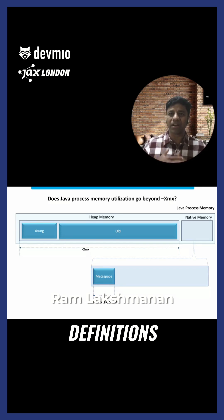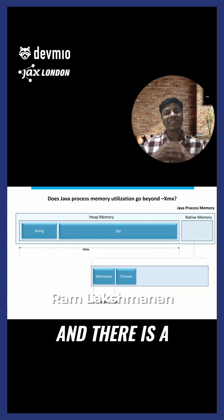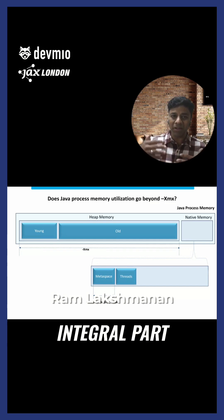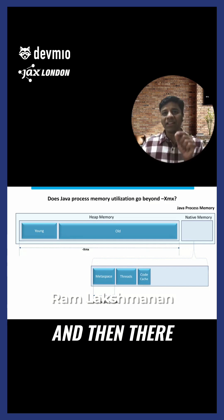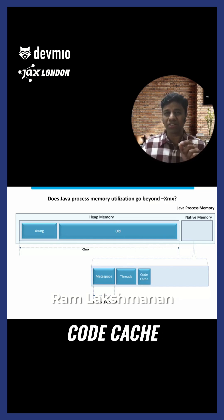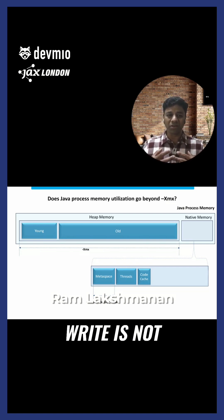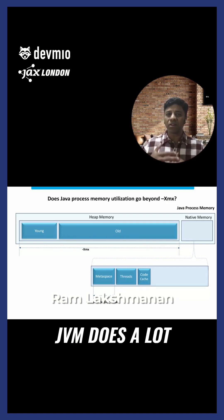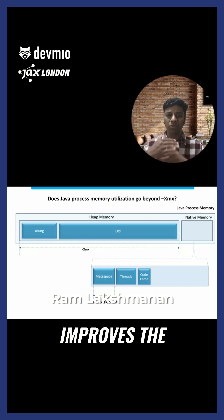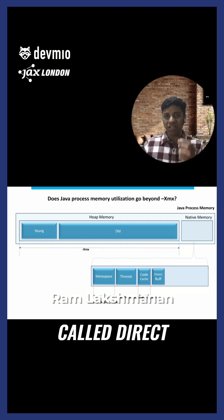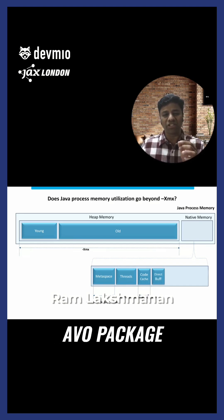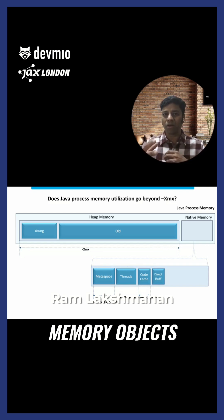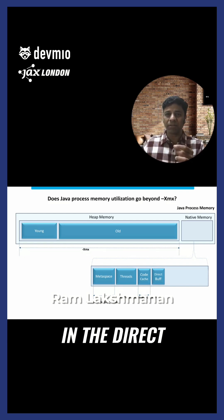There is a threads region — threads are an integral part of executing our application and they are stored in native memory. Then there is a region called code cache. The code that we write is not the actual code that the JVM executes at runtime; the JVM does a lot of hotspot compilations and improves code quality. There is also another region called direct buffer — if you're using any Java NIO package and directly manipulating memory objects, those are stored in the direct buffer.